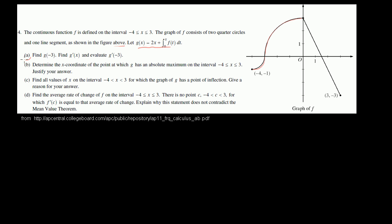Now let's do part A. Find g(-3). So we want to find g(-3). First of all, they tell us what g(x) is. So g(-3), every time we see an x, we just put a -3 there. So it's going to be 2 times -3 plus the definite integral from 0 to -3 of f(t)dt.